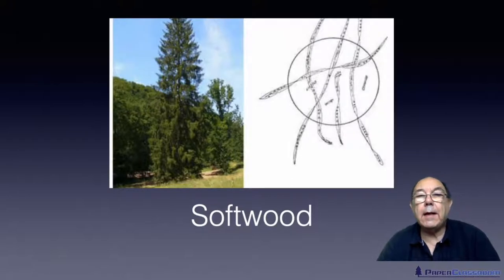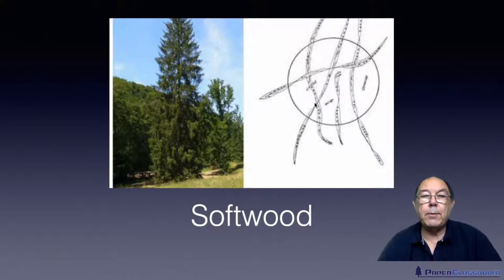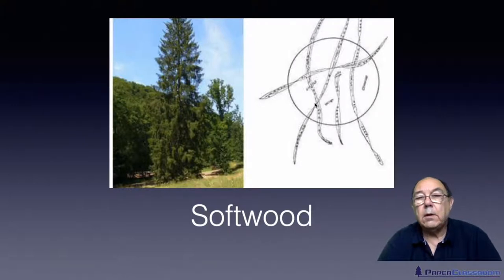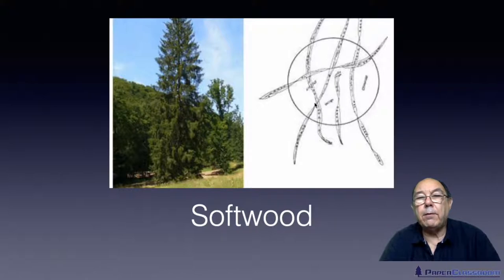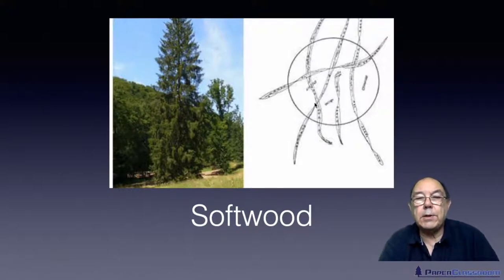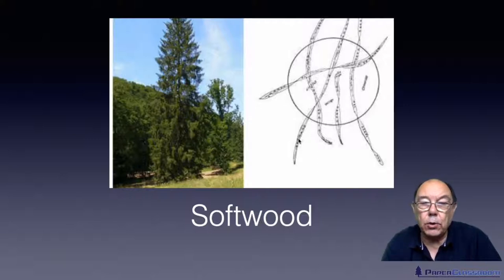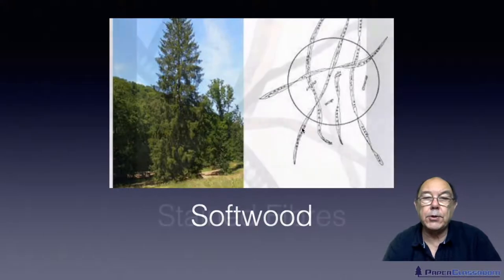These are softwood fibres and as I've mentioned in other videos, softwood fibres tend to be wide and long — wide being about 40 microns, long up to about four millimeters. One special characteristic for all softwoods are these so-called window cells or pit cells on the surface.